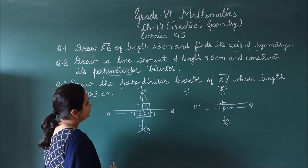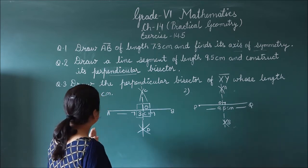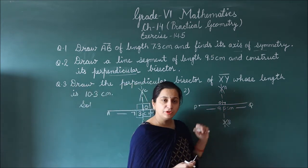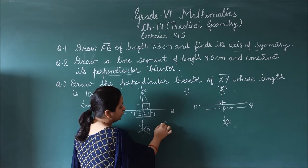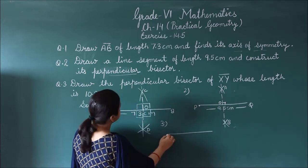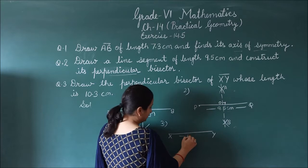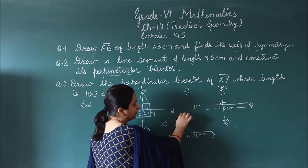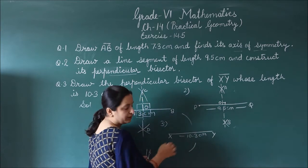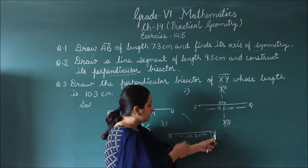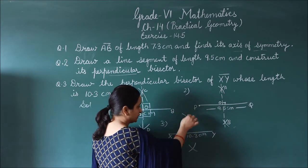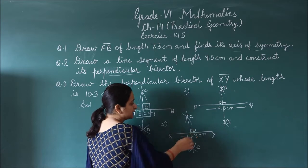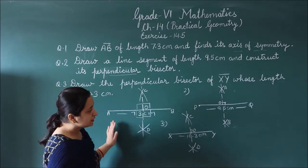Question number 3: draw the perpendicular bisector of XY whose length is 10.3 cm. Draw a line segment XY of 10.3 cm. The process is the same — use a compass with needle more than half open, draw arcs on the upper and lower sides from both X and Y with the same radius, find the intersection points C and D, and join them. CD is the perpendicular bisector.